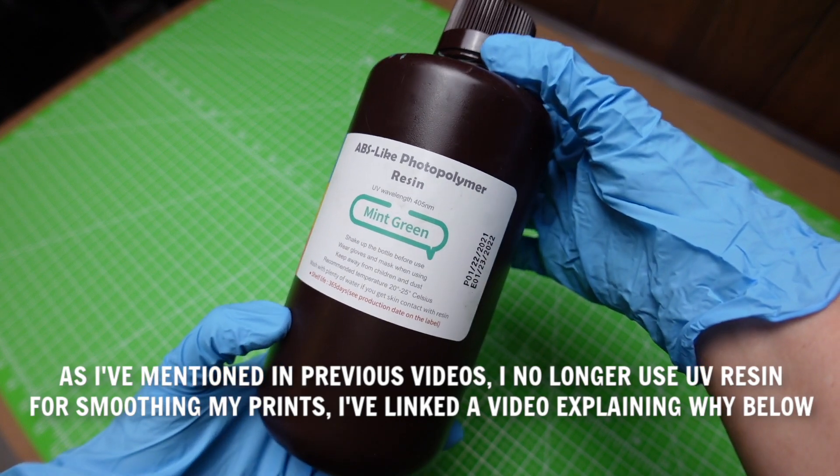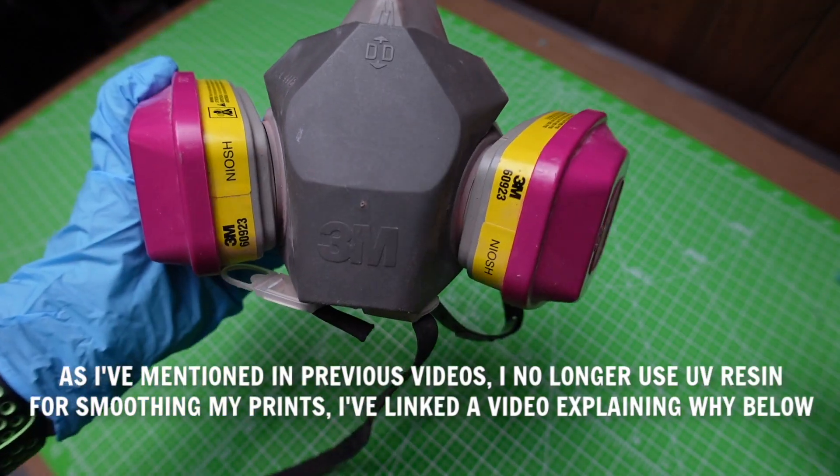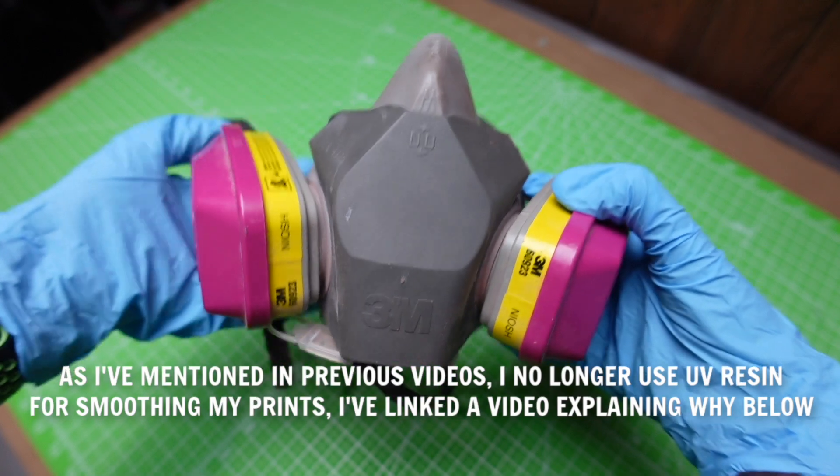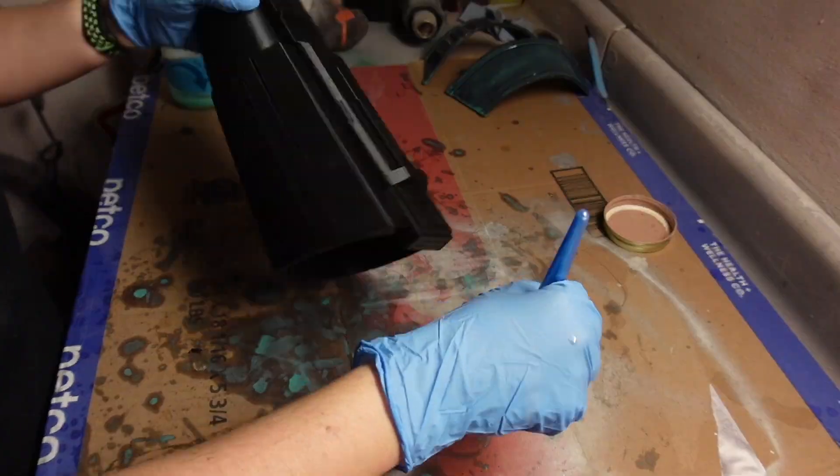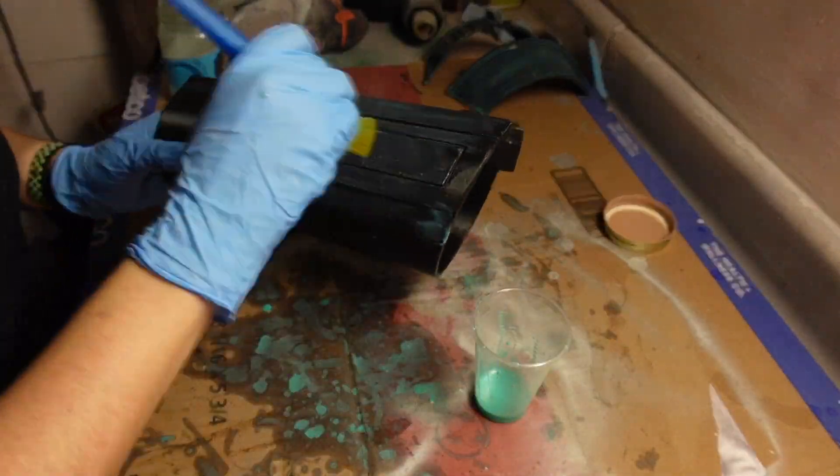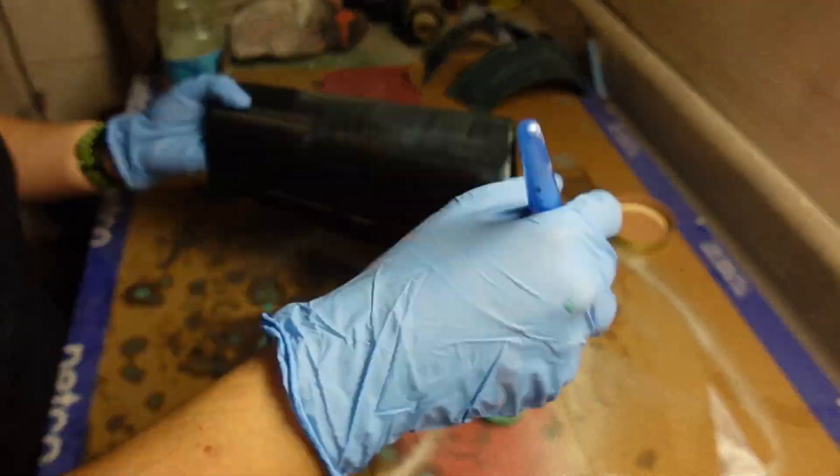For the smoothing and sanding of these gauntlets I went with photopolymer resin. I first started by making sure I had my respirator on, some gloves, as well as goggles and I was working in a well-ventilated area. I started by painting on a layer all over both gauntlets and let that UV resin cure out in the sun for 15 minutes.